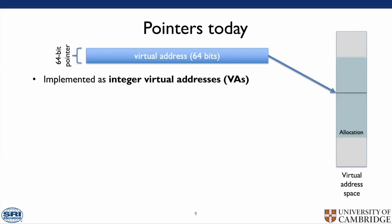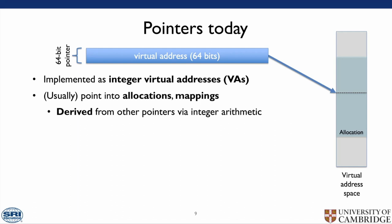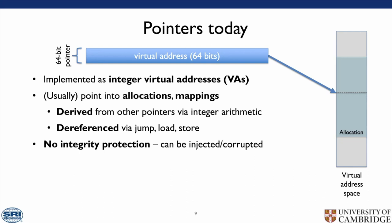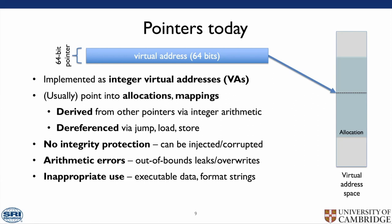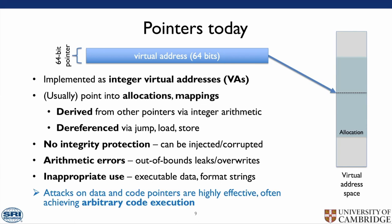Pointers today are implemented as integer virtual addresses. Usually they point to allocations and mappings, and are derived from other pointers via integer arithmetic. They are referenced by jumps, loads, and stores. There is no integrity protection and they can be injected or corrupted. Arithmetic errors such as out-of-bounds accesses and overflows are possible. Inappropriate use — for example, executable data and format strings — is easy. Attacks on data and code pointers are highly effective, often achieving arbitrary code execution.